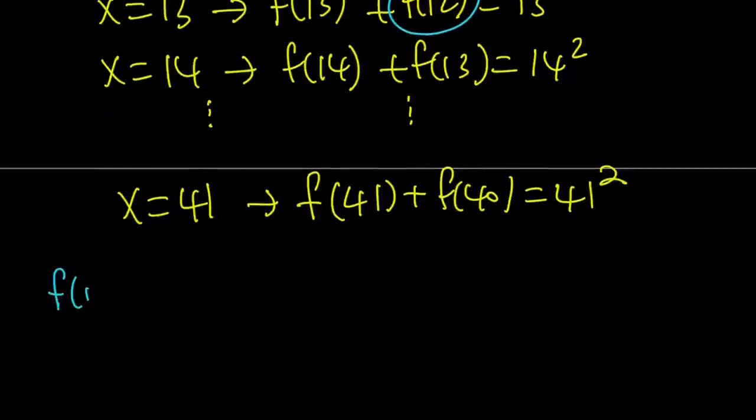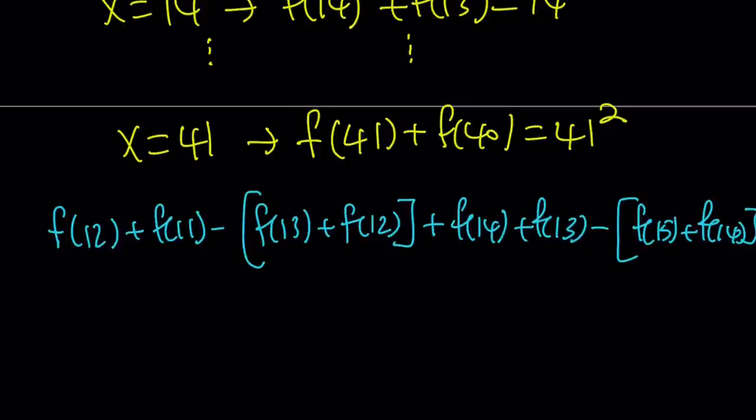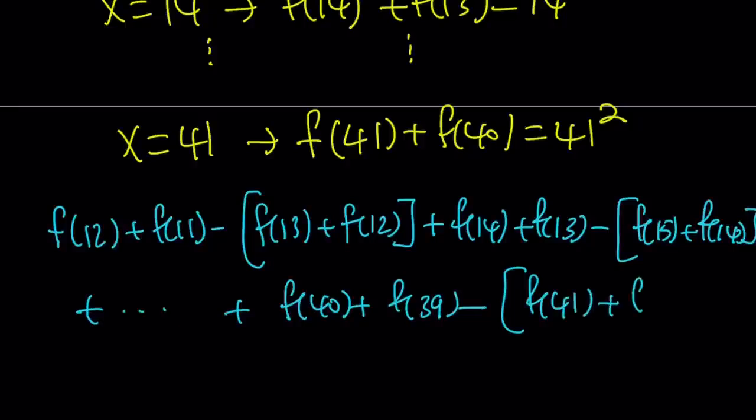We're going to take f(12) + f(11), and then from it we're going to subtract f(13) + f(12). So we're going to subtract the second equation from the first one. And then we're going to add the third one, which is f(14) + f(13). And then we're going to subtract the next one, which is f(15) + f(14). And we're just going to proceed in this manner until we get to f(40) + f(39). And then finally, we're going to be subtracting from this f(41) + f(40).